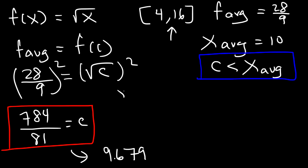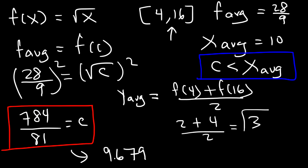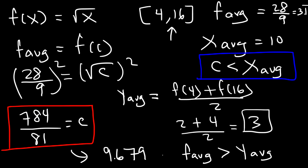Let's calculate the average y value and compare it to the average value of the function. f of 4 is the square root of 4, which is 2. f of 16 is the square root of 16, which is 4. The average is 2 plus 4 over 2, equals 3. Now 28 over 9 is approximately 3.1 repeating, so the average value of the function is greater than the average y value in this problem.